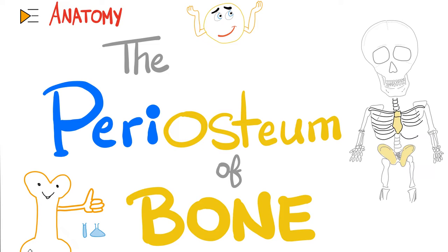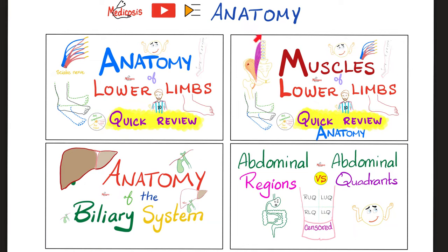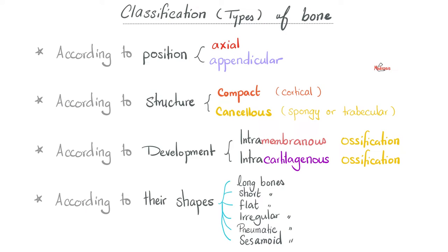I have many anatomy videos in this playlist. Types of bones depend on how you classify them: according to position — axial and appendicular; according to structure — compact and cancellous; according to development — intramembranous ossification or intracartilaginous ossification; according to shape — long bones, short bones, flat bones, irregular bones, pneumatic bones, and sesamoid bones.